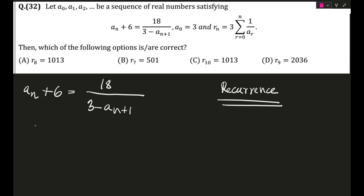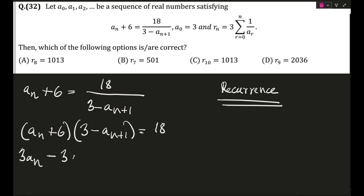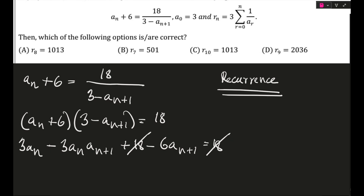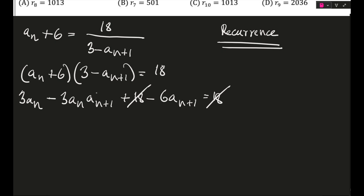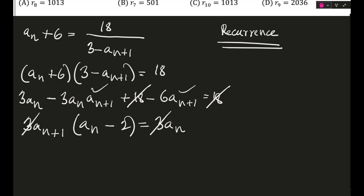Starting the solution: from the recurrence relation, I multiply both sides by (3 − aₙ₊₁). This gives aₙ₊₆ · (3 − aₙ₊₁) = 18. Expanding: 3aₙ − aₙ · aₙ₊₁ + 3·6 − 6aₙ₊₁ = 18. The 18s cancel, and collecting the aₙ₊₁ terms — taking 3aₙ₊₁ common — gives a simplified expression.